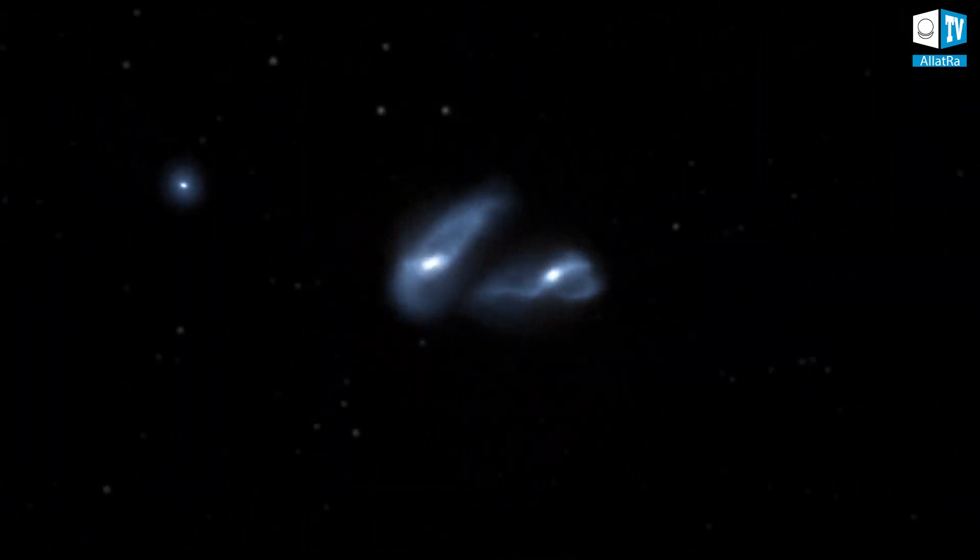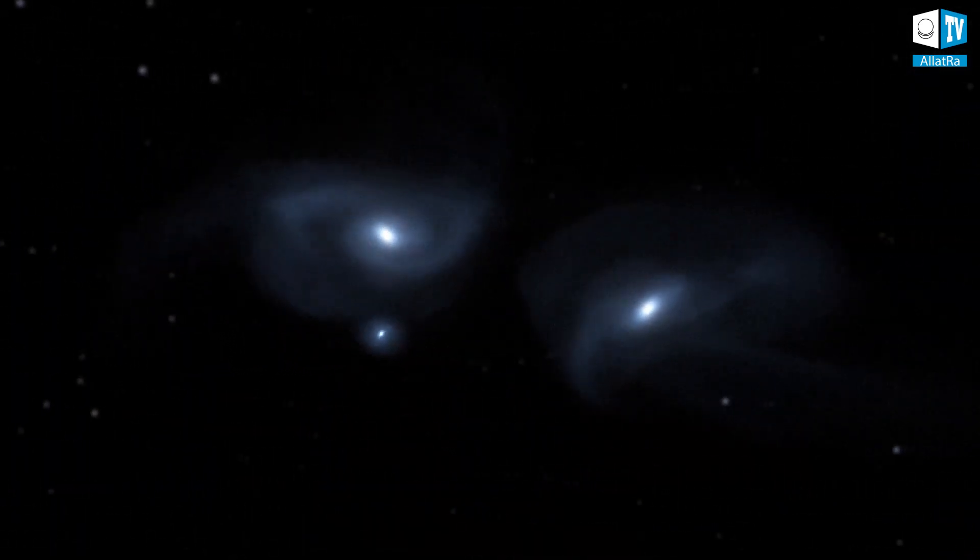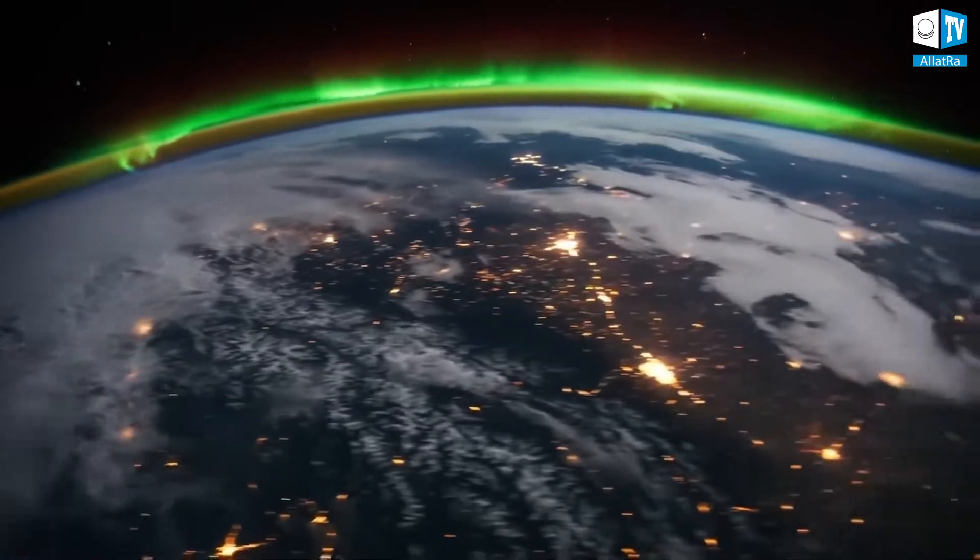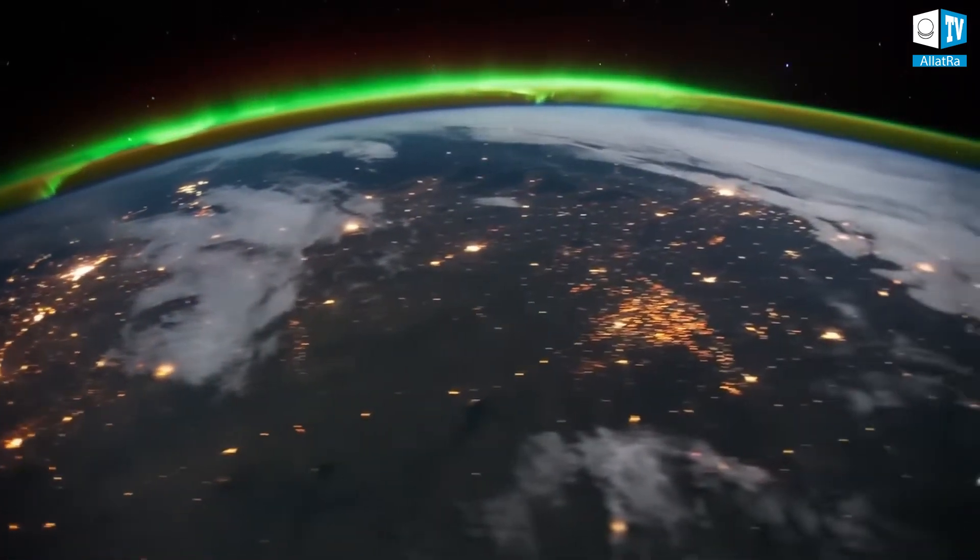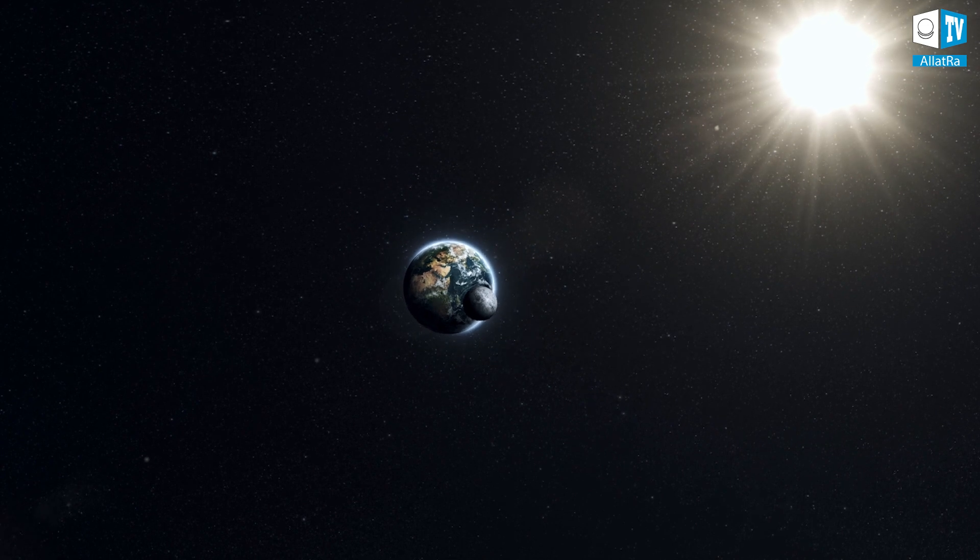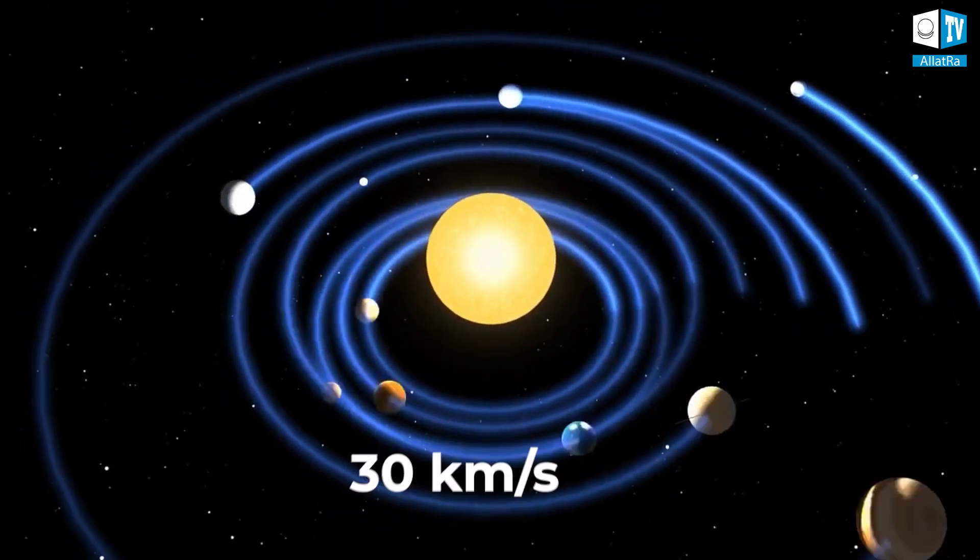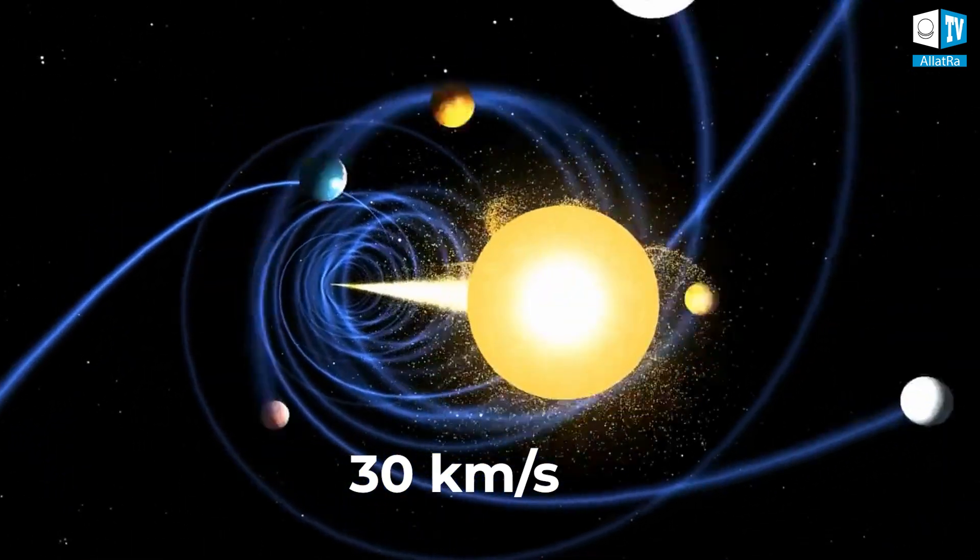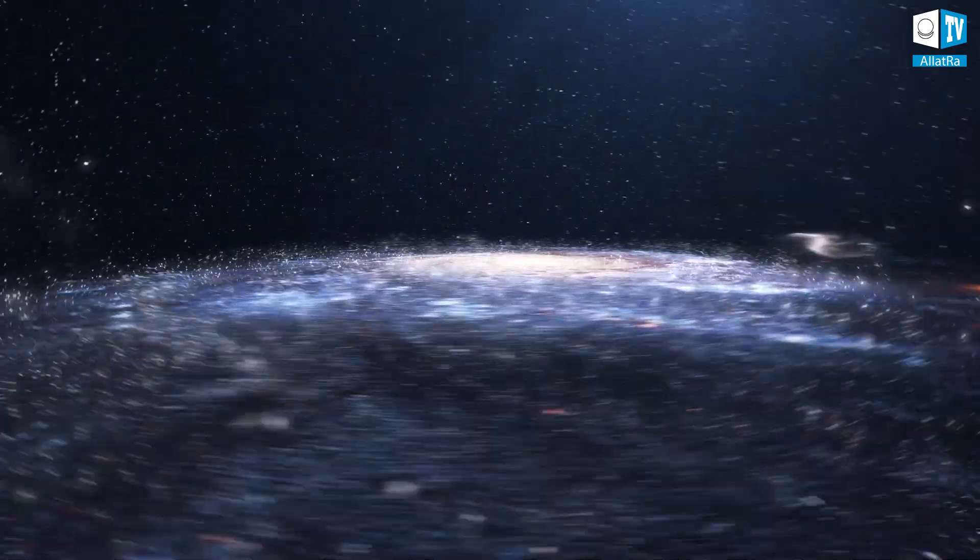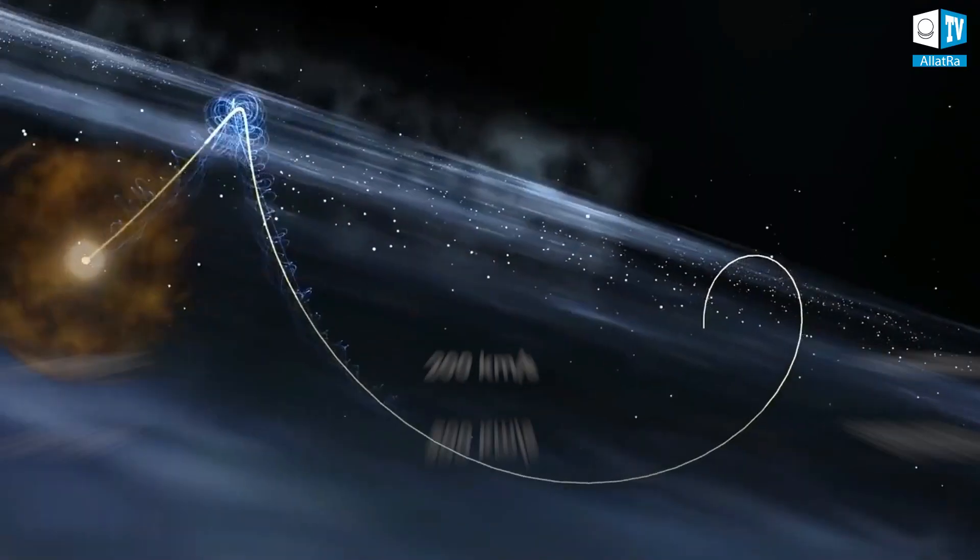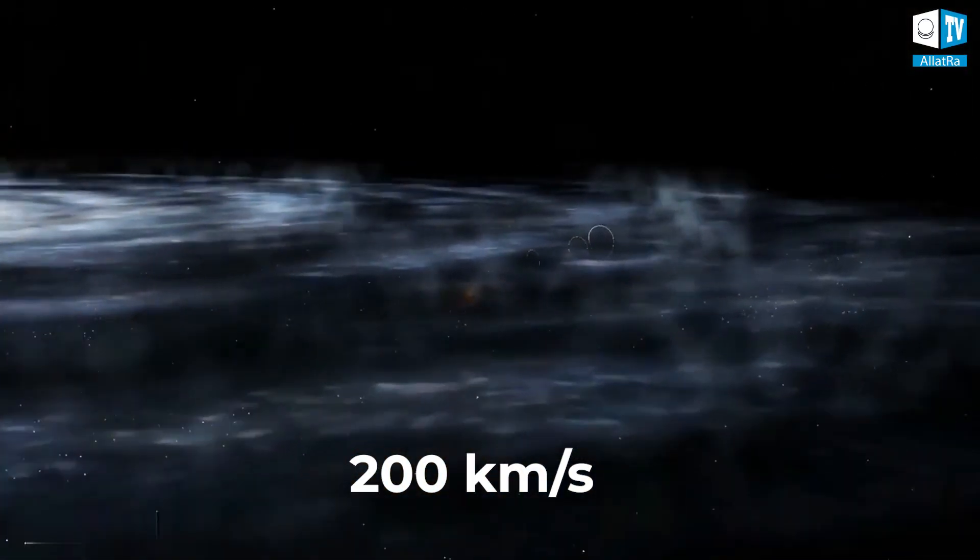In outer space, everything moves at enormous speeds. Our planet rotates on its axis and orbits the Sun. The Earth moves in an elliptical orbit with an average speed of 30 km per second. Our solar system moves around the galactic center at an average speed of 200 km per second.